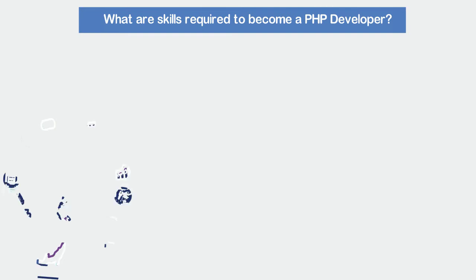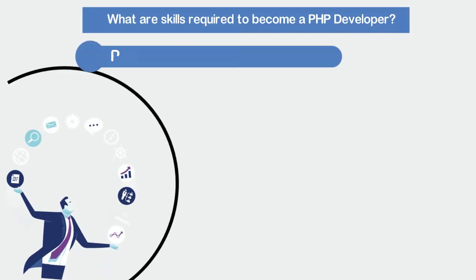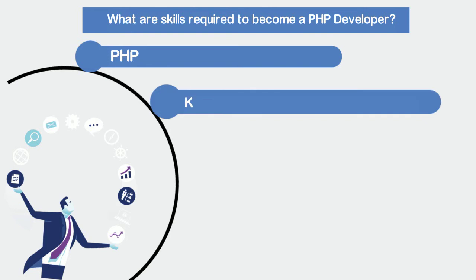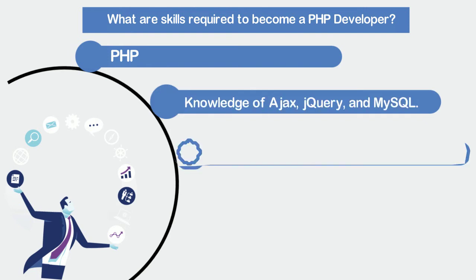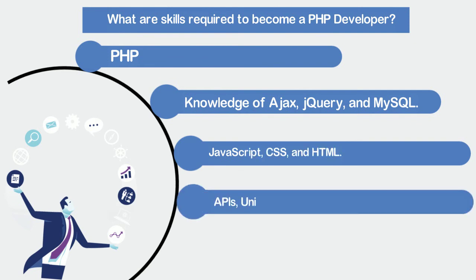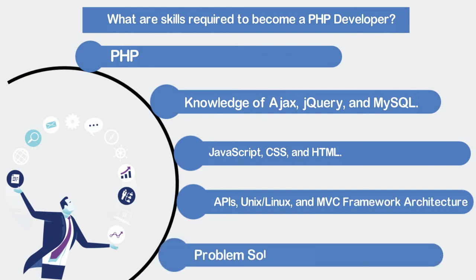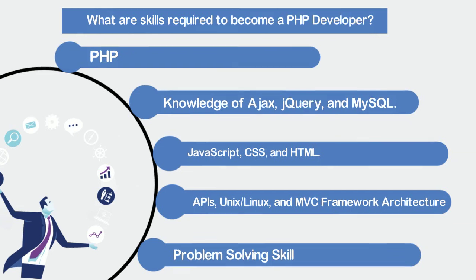Let's have a look at the skills required to become a PHP developer. At the beginner level: knowledge of Ajax, jQuery, and MySQL. If you are going to become a full-stack developer, you also need to know JavaScript, CSS, and HTML, API, and Frameworks. It also helps to have good communication skills, a knack for problem solving, and the ability to think critically.